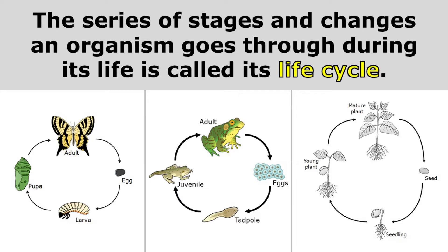The series of stages and changes an organism goes through during its life is called its life cycle. Here you can see diagrams showing the life cycle of a butterfly, a frog, and a plant.